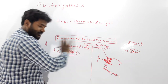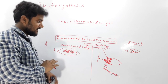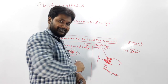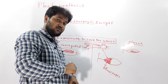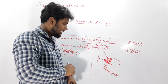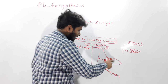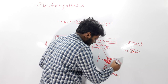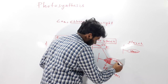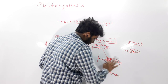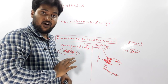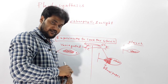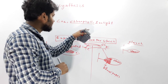On testing this leaf for the presence of starch, it was clear that starch was positive only in the exposed part — no starch was found under the black paper. This experiment indicates the necessity of sunlight for photosynthesis to occur.